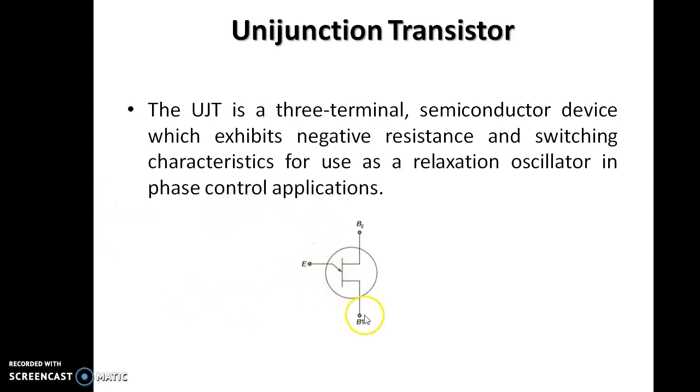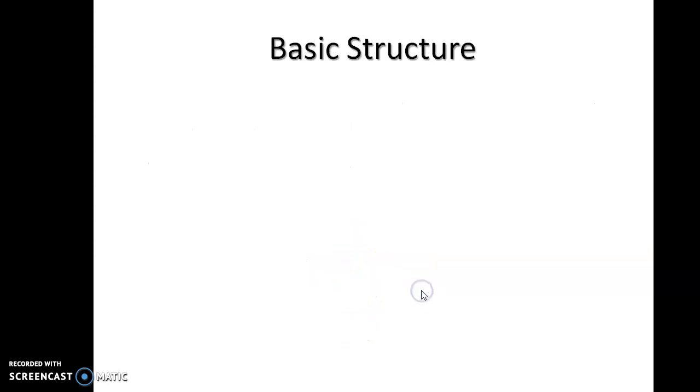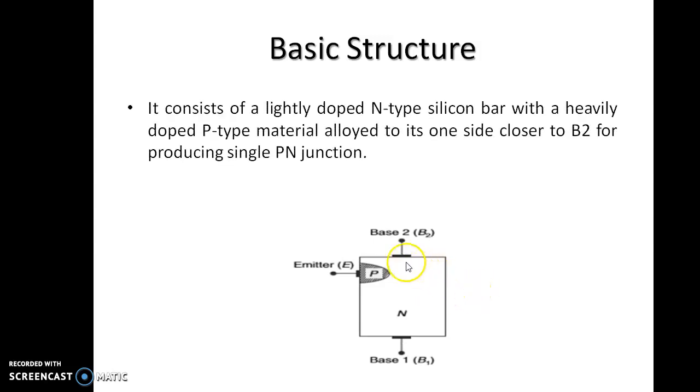It has three terminals: Emitter, Base-1 and Base-2. The basic structure consists of a lightly doped N-type silicon bar with a heavily doped P-type material alloyed to its one side closer to B2 for producing a single PN junction.